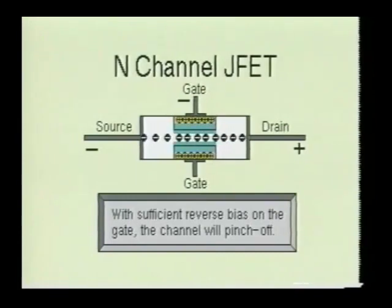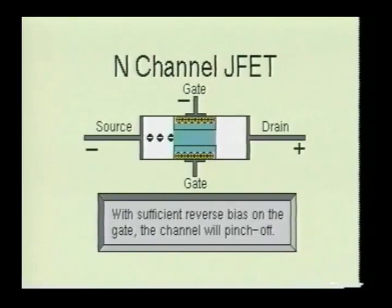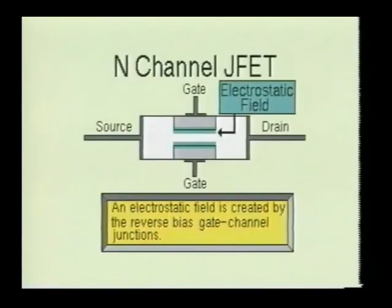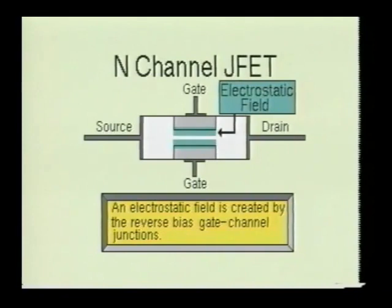When the reverse bias is increased sufficiently, the depletion region meets at the center of the channel and cuts off the current flow through the device. This is referred to as the pinch-off region. The gate channel junctions are almost never forward biased. The name 'field effect' comes from the fact that the depletion regions in the channel are the result of the electrostatic field caused by the reverse bias gate channel junctions.